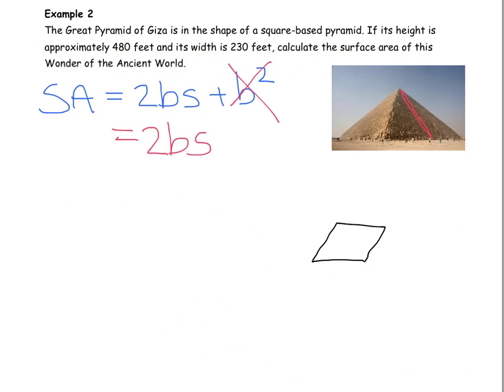So here we have our square base, and we know that this dimension is 230. And we'll try to add the triangles. Definitely not the easiest shape to draw, but it might help you to see exactly what's going on. So this is the slant right here that we need.